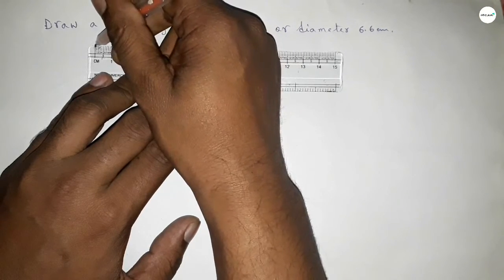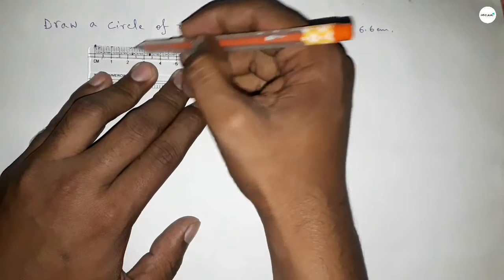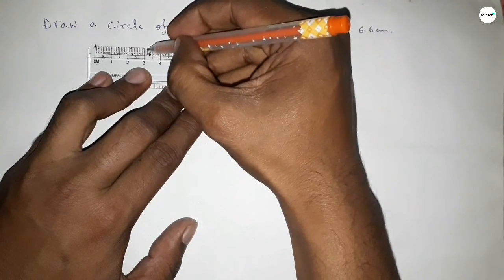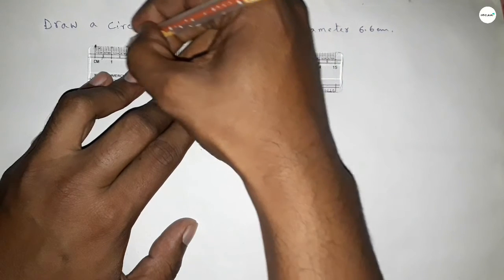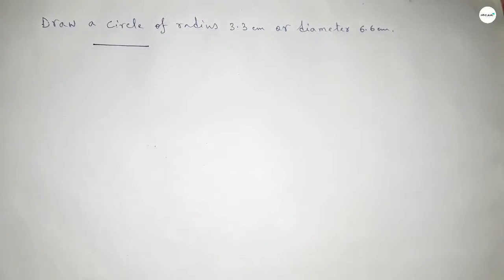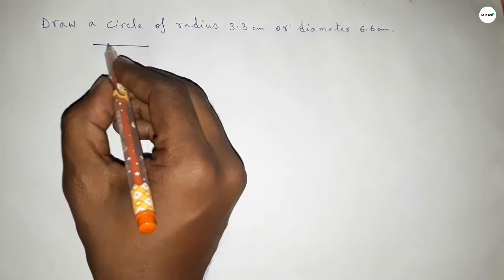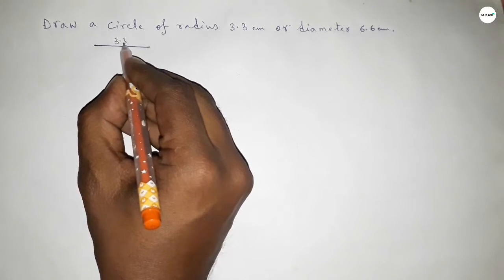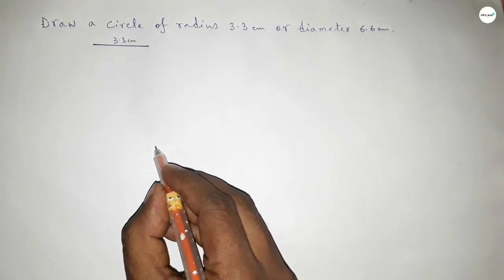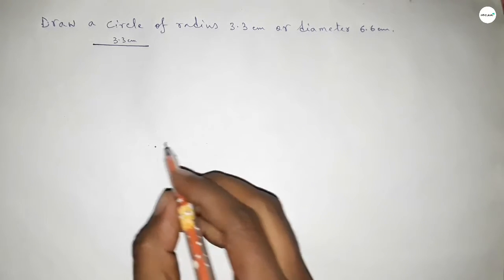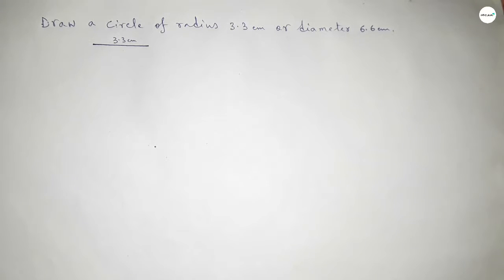So this is starting 0, 1, 2, 3, and this is 3.3 centimeter. We know that radius of a circle is half of diameter, so this is 3.3 centimeter. Now taking here a point, next taking the length 3.3 centimeter by using compass by this way.